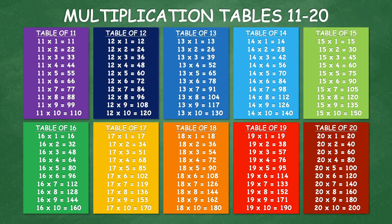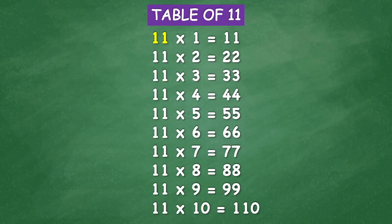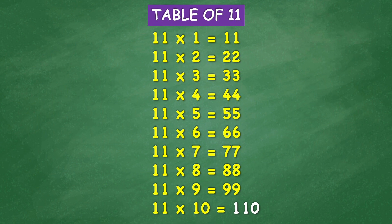Abacada Multiplication Tables 11 to 20. Table of 11: 11 times 1 equals 11, 11 times 2 equals 22, 11 times 3 equals 33, 11 times 4 equals 44, 11 times 5 equals 55, 11 times 6 equals 66, 11 times 7 equals 77, 11 times 8 equals 88, 11 times 9 equals 99, 11 times 10 equals 110.